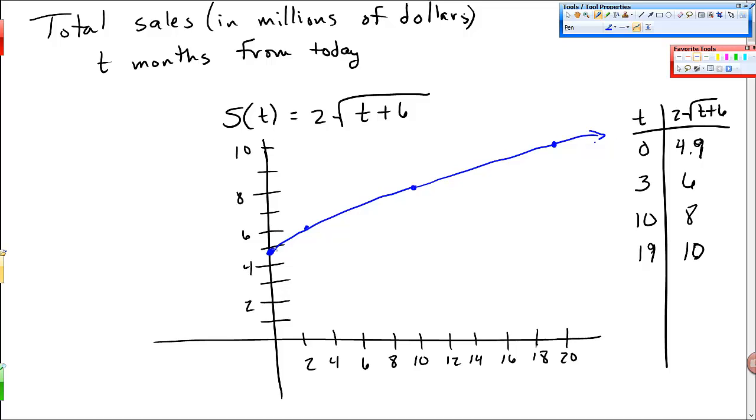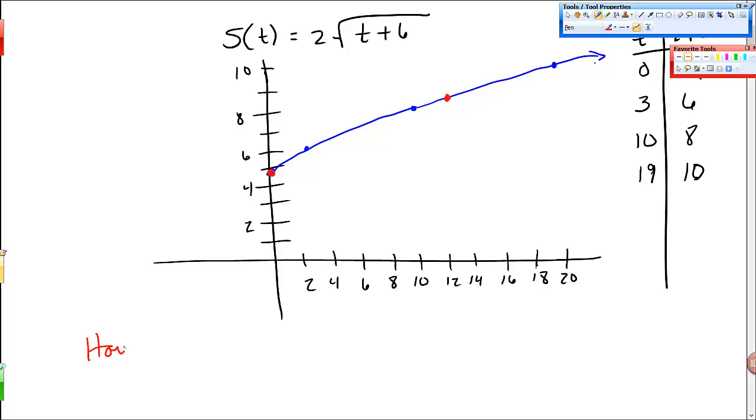And then when I graph this, I get 0 starting about here, right around 5. And then at 3, I'm at 6. At 10, I'm at 8. You'll forgive me if this is a little bit off because I don't have graph paper. But it looks like this and it kind of has this shape because it's a square root. I know that it's kind of like this shape and goes like this, but it definitely ends at 0. I'm not going to go backwards in time.